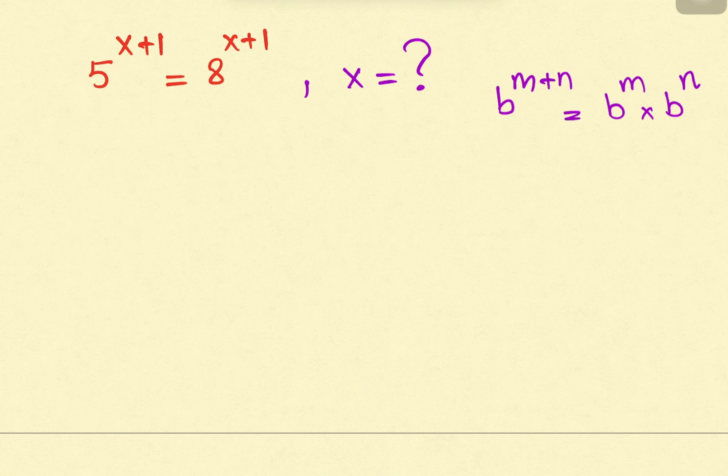The right side we can change: 5 raised to x multiplied by 5 raised to 1 equals 8 raised to x multiplied by 8 raised to 1.